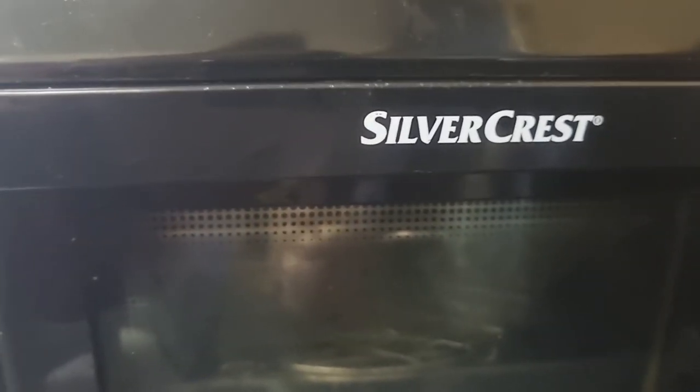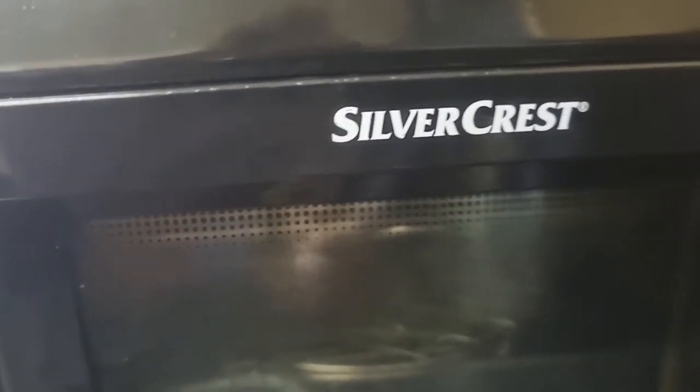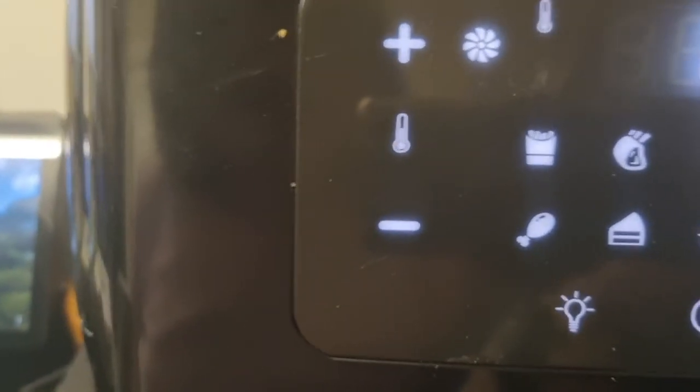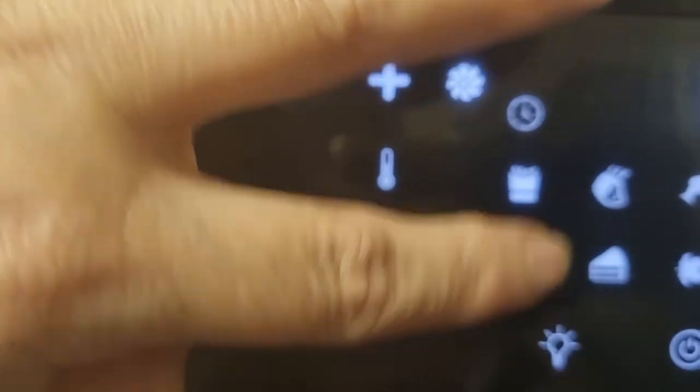Okay, and oh gosh see the lid is heavy too. Lastly what do we have? Lastly we have my Silvercrest from Lidl's. This is an air fryer. Let me plug it in and you can see all what it does because you know we've shown the others so let's show what this one does.